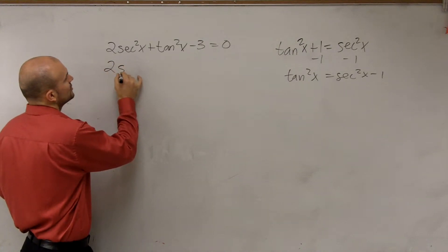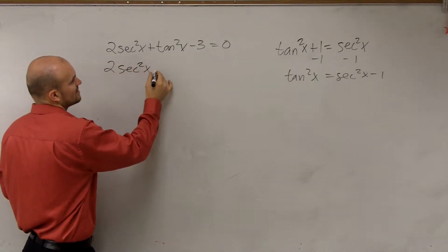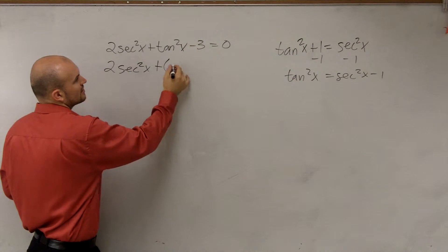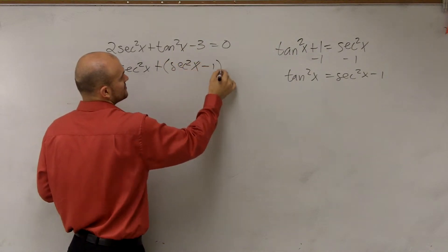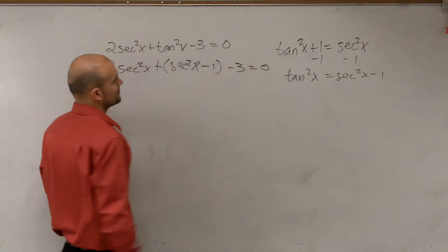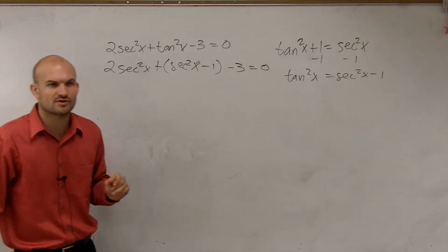So therefore, now I have 2 times secant squared of x plus, instead of writing tangent squared, I'm going to write secant squared of x minus 1, minus 3 equals 0. So do you guys see what I did to convert that over?